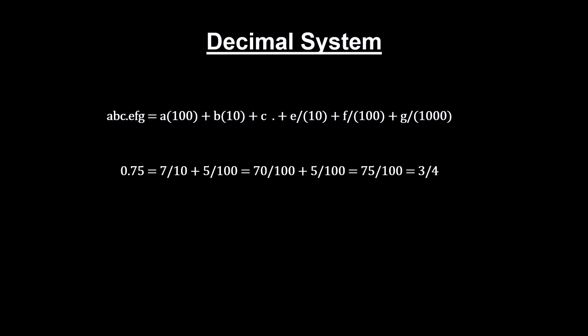We write abc.efg as this. For example, 0.75 is 7 over 10 plus 5 over 100, or 3 fourths.